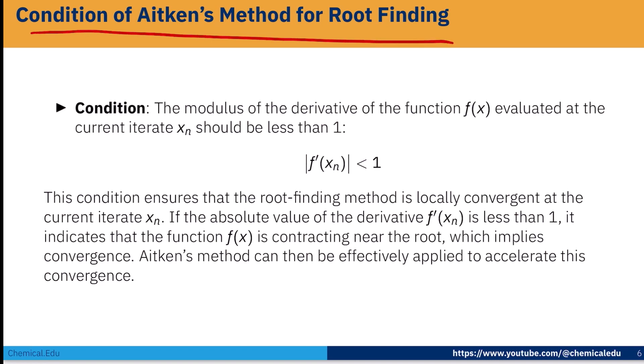Obviously, the modulus of the derivative of the function f(x) evaluated at current iterate x_n should be less than 1. This is the condition. If this condition is satisfied, then it will converge or we will get the roots.